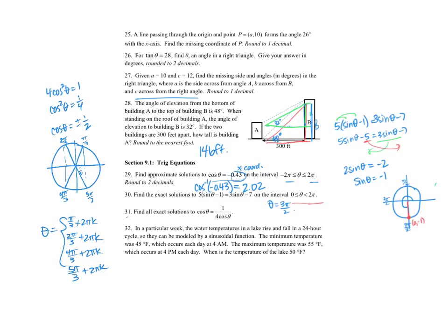Number 32: the temperatures of a lake rise and fall in a 24-hour cycle. The minimum temperature is 45 degrees, occurring at 4 a.m., and the maximum is 55 degrees, occurring at 4 p.m. It's modeled by a sinusoidal function, so the midline is at 50 degrees. The temperature equals 50 degrees halfway between 4 a.m. and 4 p.m., which is 10 a.m.